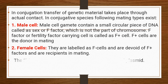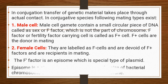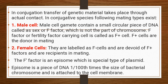Female cells are labeled as F- cells and are devoid of the F factor; they are recipients in mating. The F factor (fertility factor) is an episome, a special type that is 1 to 100 times the size of the bacterial chromosome and is attached to the cell membrane.